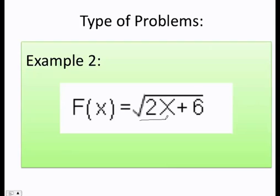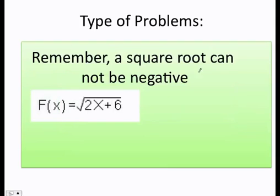Now, what happens when I have a square root? Well, let's remember, a square root can never be negative. Therefore, I need to go ahead and grab what is inside, in this case, 2x plus 6, and make it that it can be greater or equal to zero.